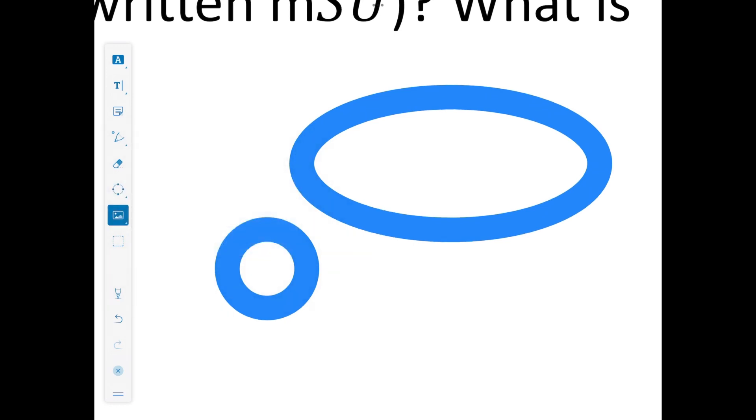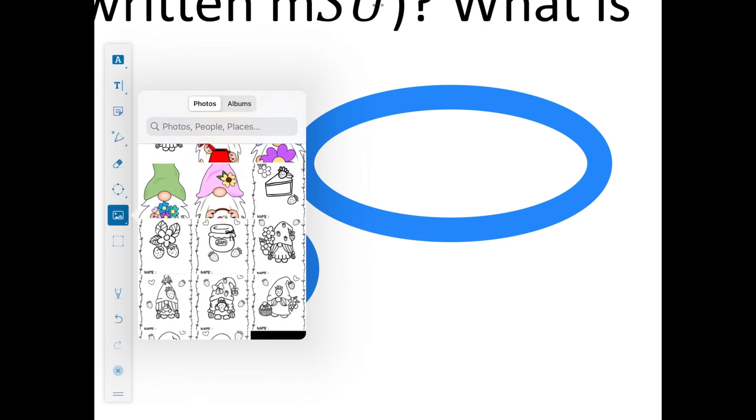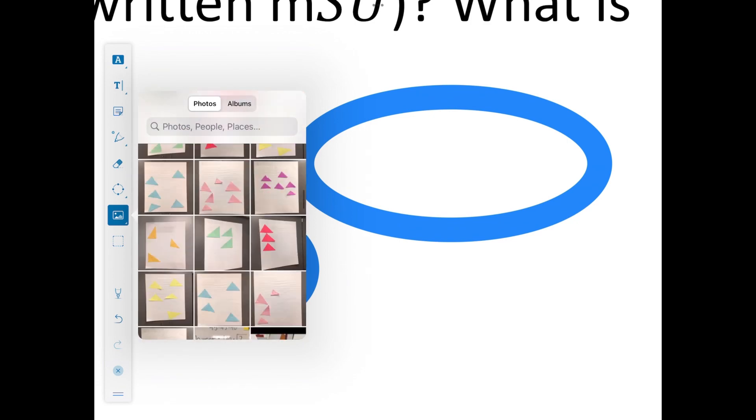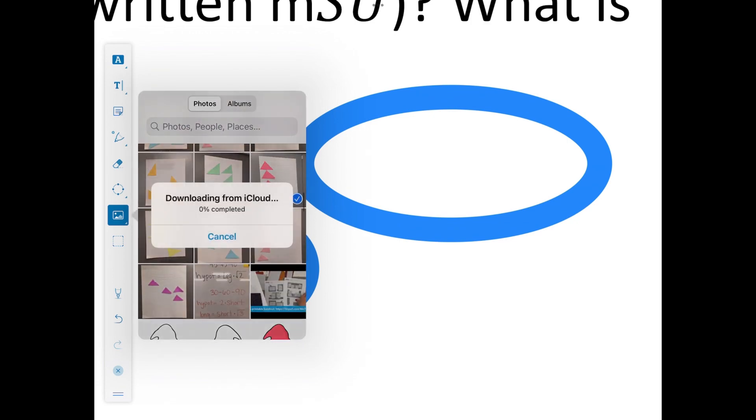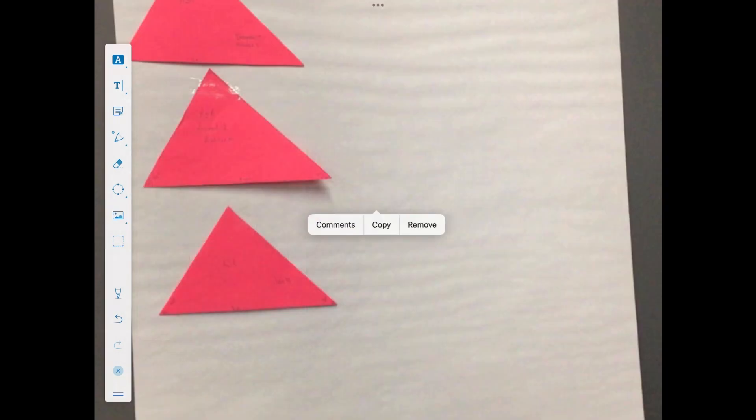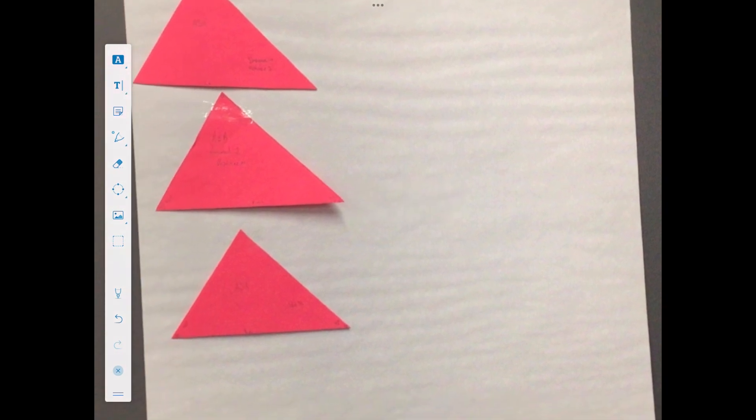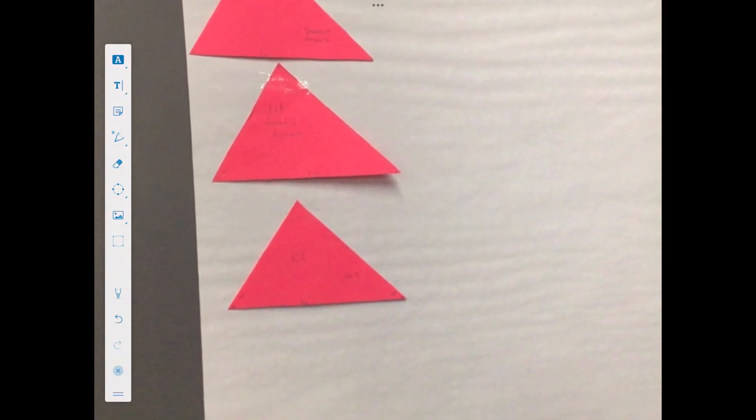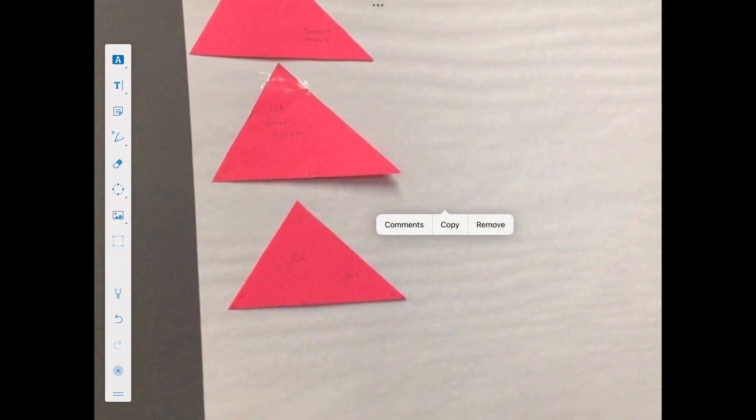The other nice thing is that you can import pictures either from your camera or from your camera roll. And I do use this often when I want to pull up a picture. Here's something we were talking about, I can pull it up into the PDF. And the nice thing is that you can mark on the picture as well, just like you did on the PDF.